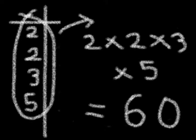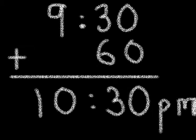2 times 2 times 3 times 5 equals 60. This means that all three alarms will go off together after 60 minutes. 9:30 plus 60 minutes equals 10:30. All three alarms will go off at 10:30 p.m.